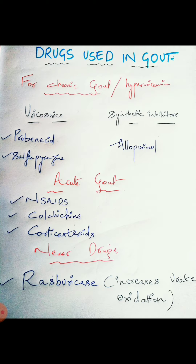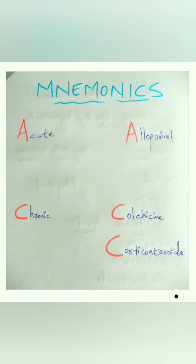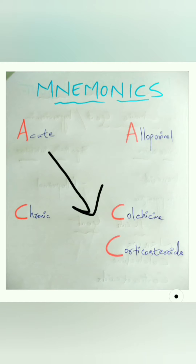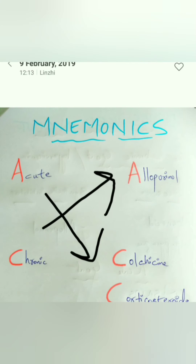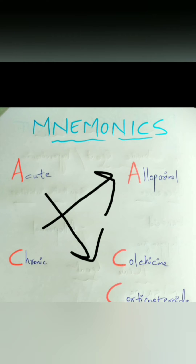For acute gout we have NSAIDs, colchicine, and corticosteroids, and for newer drugs we have rasburicase. You have to think of it as opposite — for acute it will be colchicine and corticosteroids, and for chronic we will have allopurinol. So this works in an opposite way, and you can use mnemonics to understand which drug goes where.